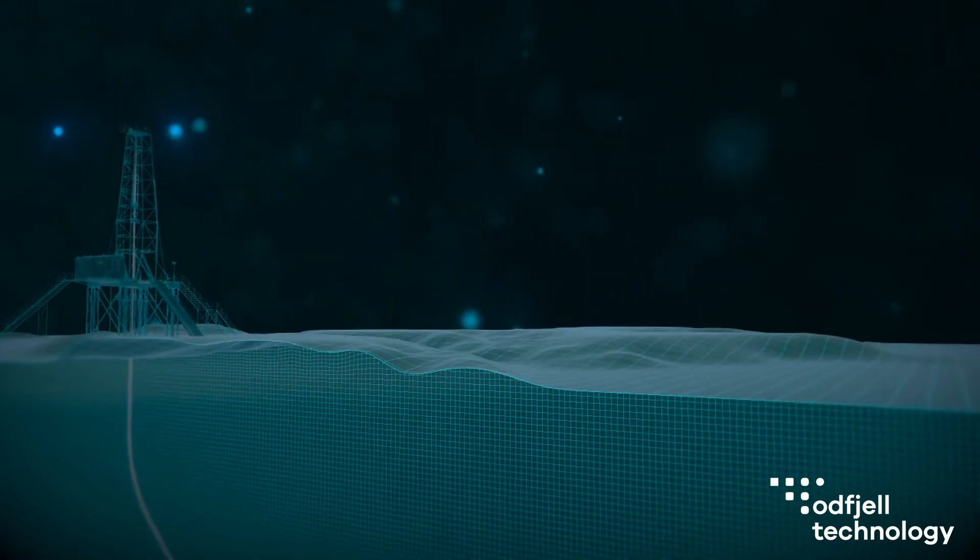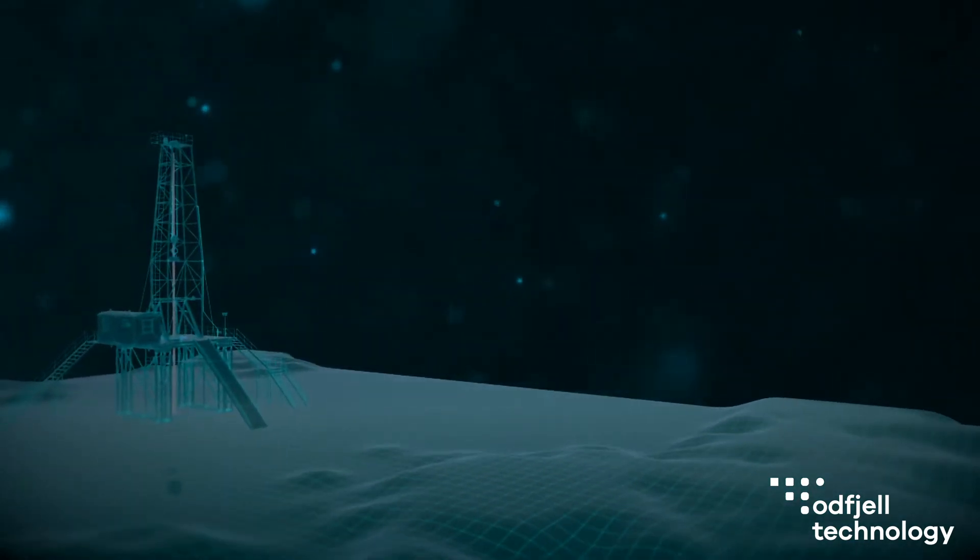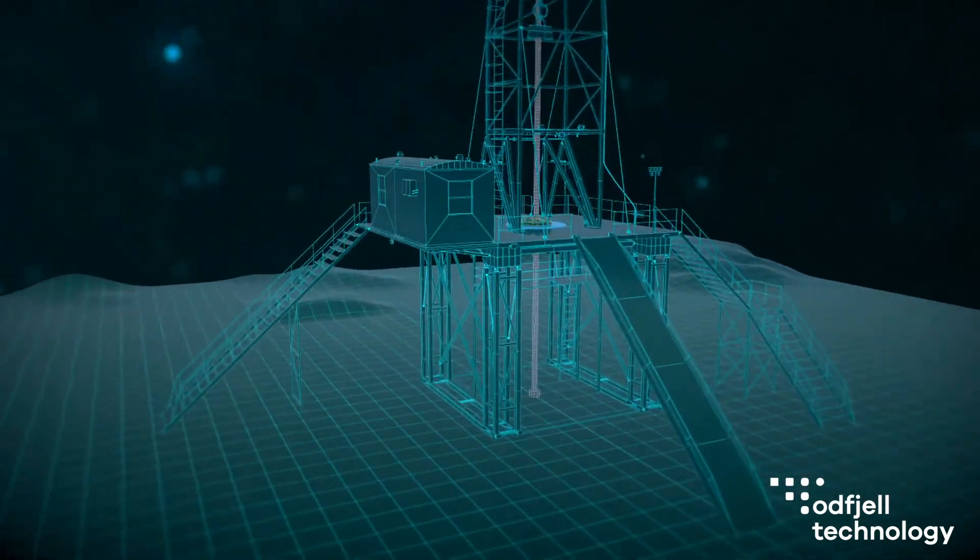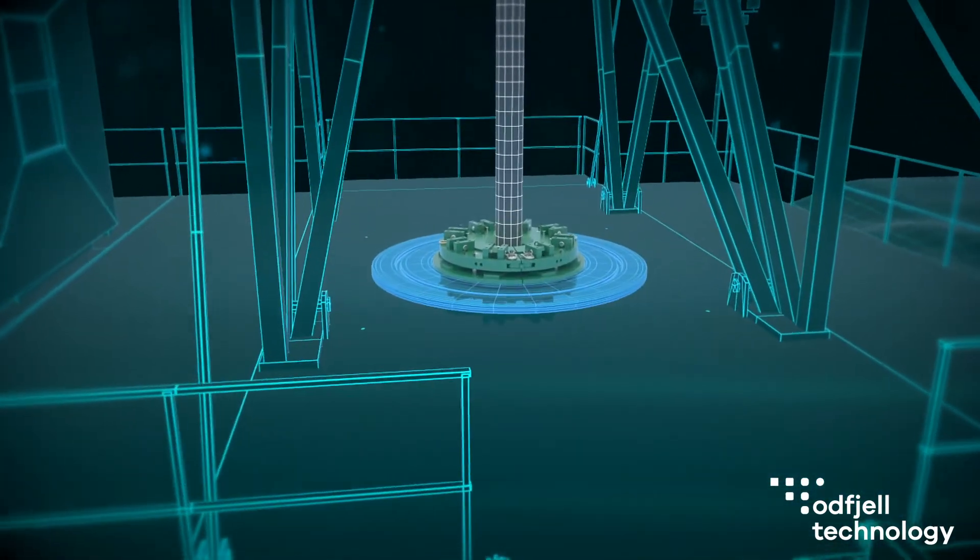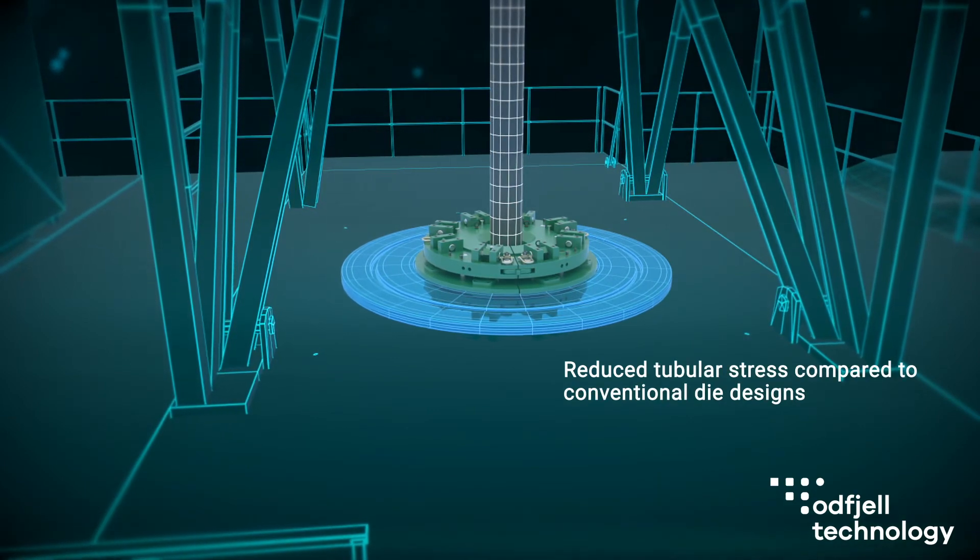Whether you're running drill pipe, VHA, casing, or tubing, the UltraFMS's unique V-shaped dies significantly reduce the stress applied to the tubular body compared to conventional die designs.